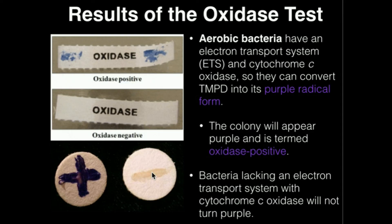The purple should be pretty obvious. If you see this purple, that's indicative of a positive oxidase test result, meaning the bacteria possesses cytochrome C oxidase, and is also usually indicative that the bacteria is aerobic. Make sure to watch the demonstration video.